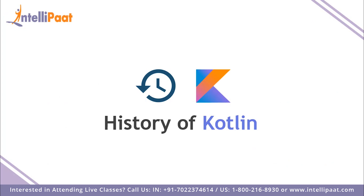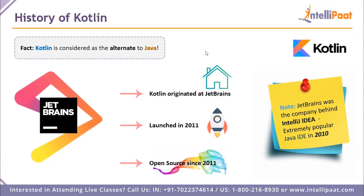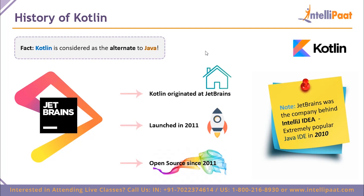How did Kotlin come by? The history of Kotlin is actually very interesting. Kotlin is considered the alternate to Java. For the last decade or so, Java was the biggest, most popular programming language to have ever existed, and then Python came along and took over the throne. So for Kotlin to be considered the alternate to Java, it had to be better than Java — which means Kotlin is on the same legacy level.